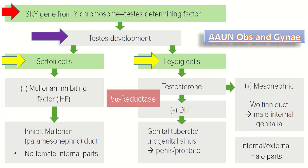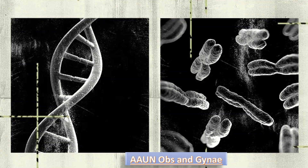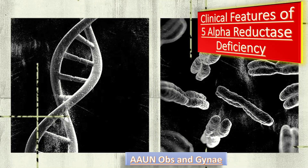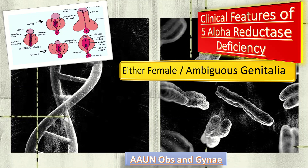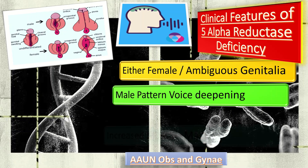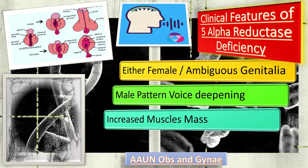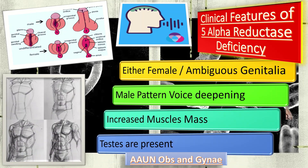Internal and external male parts are present, but the genitalia appear ambiguous — either female or ambiguous. There is virilization of the female genitalia along with a small phallus, but masculinization takes place at puberty. In those with testes in situ, 60 to 80 percent undergo a change of gender from female to male at some point from late childhood onward. There is also male-pattern voice deepening and increased muscle mass due to elevated testosterone levels.